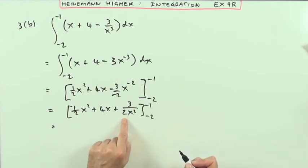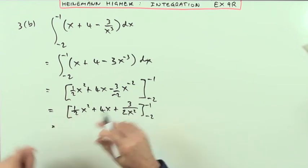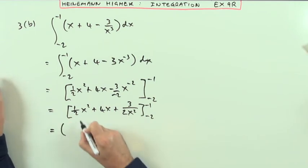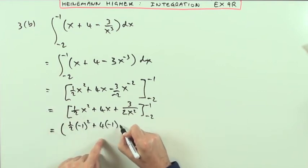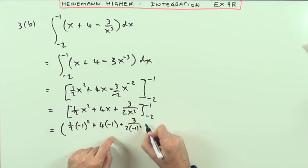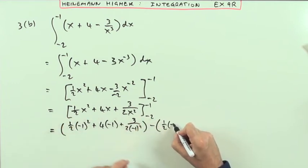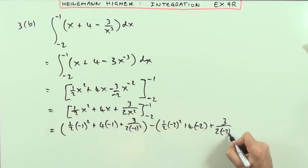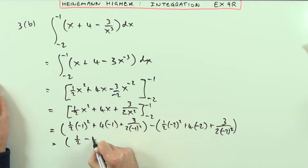I could have taken out a factor of a half to remove fractions, but I've gone past it now. Evaluating: at negative 1 it's a half of negative 1 squared plus 4 times negative 1 plus 3 over 2 times negative 1 squared, and subtracting the value at negative 2: a half of negative 2 squared plus 4 times negative 2 plus 3 over 2 times negative 2 squared.